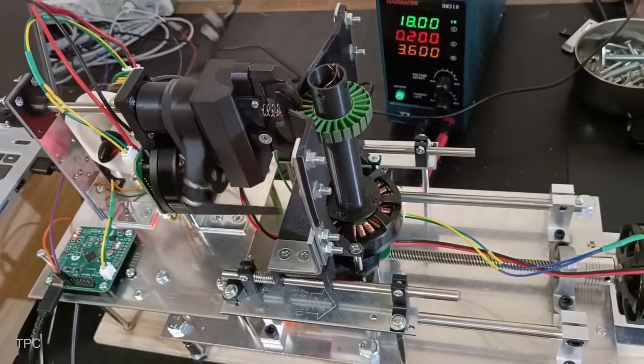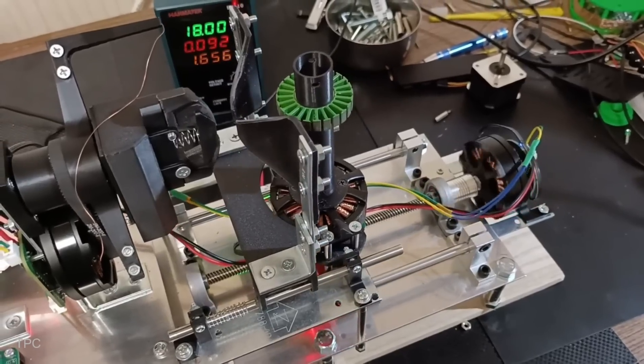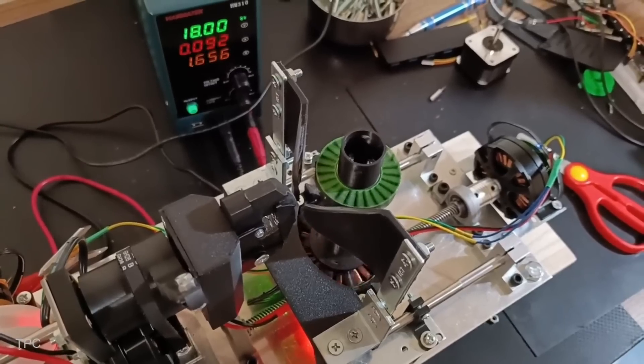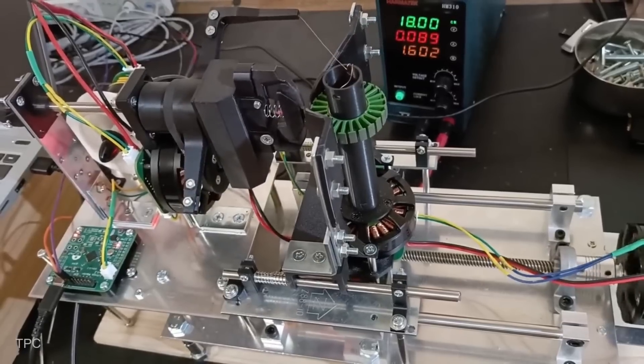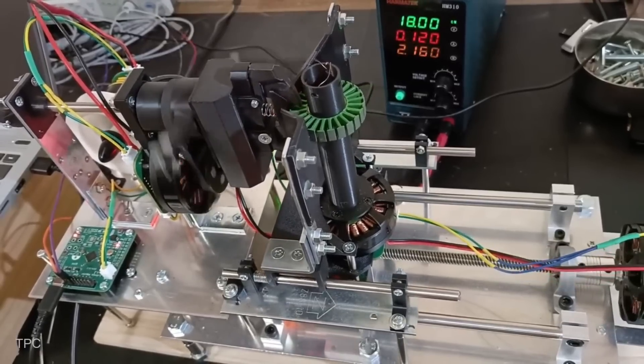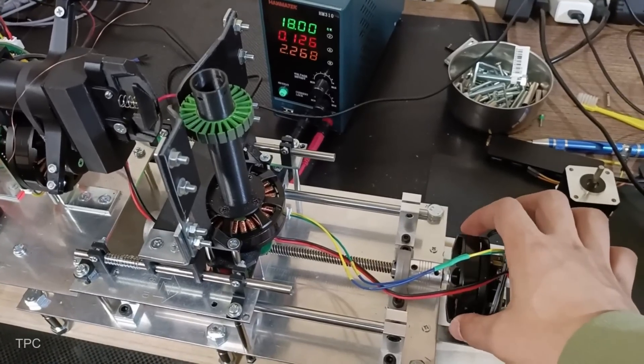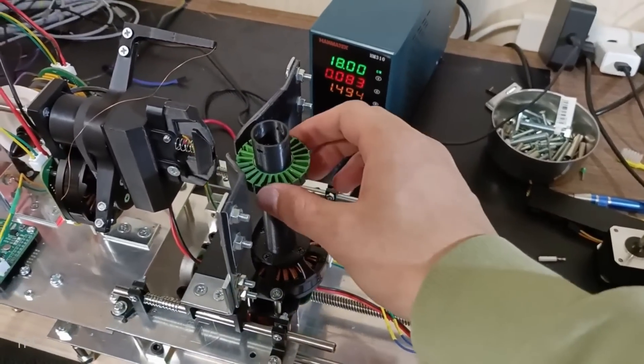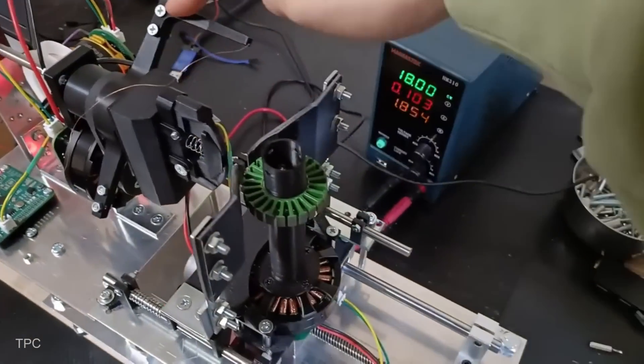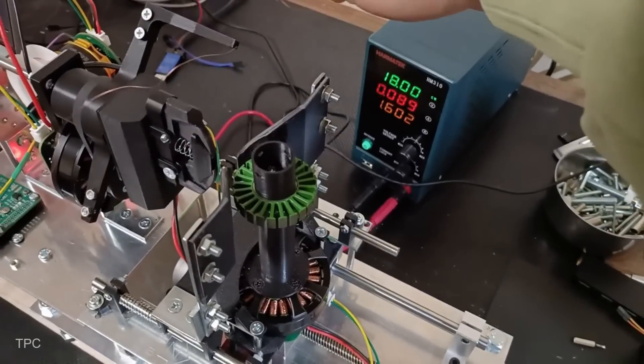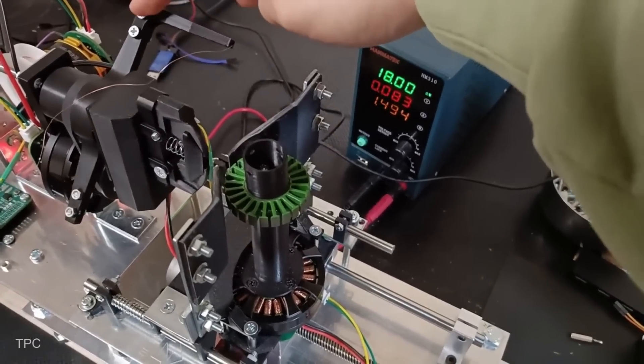The machine is powered by four brushless gimbal motors, known for their smooth and precise low-speed performance, perfect for delicate winding operations. To ensure accuracy, he used the simple FOC library to implement closed-loop angle control, allowing the motors to return to their exact position if disturbed.